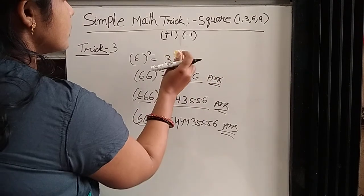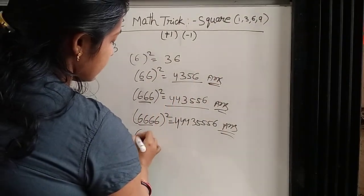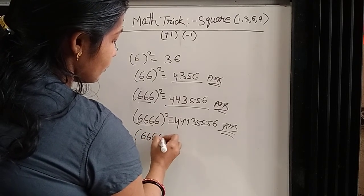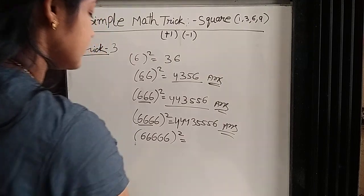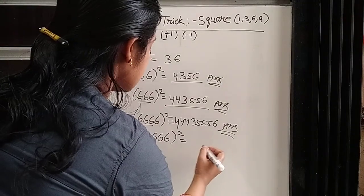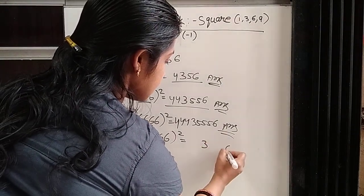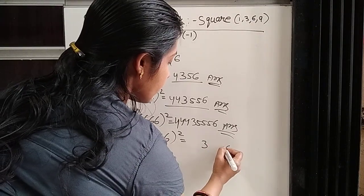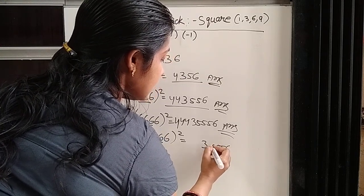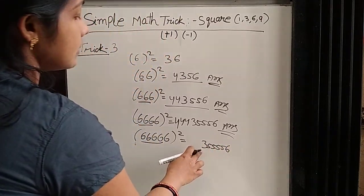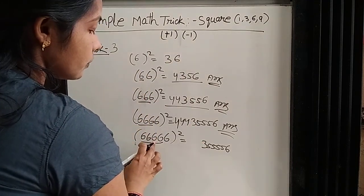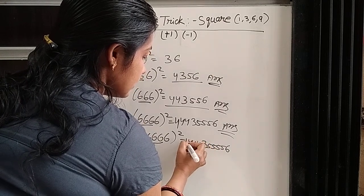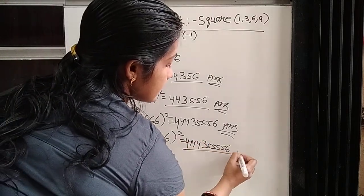Now if there is 5 6: count 1, 2, 3, 4, 5. Same, 6 square is 36 — write 36 here. And the rest are four 6s: for 4 6, we write 45. Count 1, 2, 3, 4. And 3 plus 1 is 4 — for 4 6, we write 44. This is the answer.